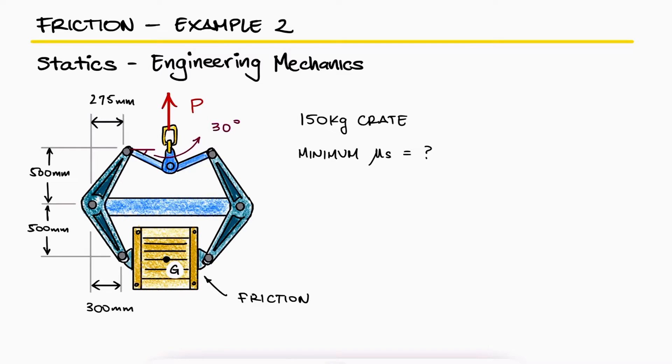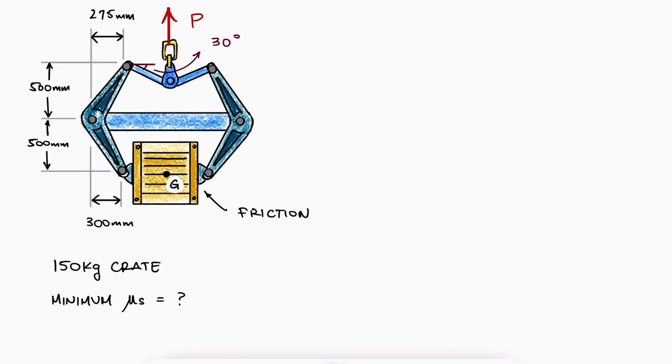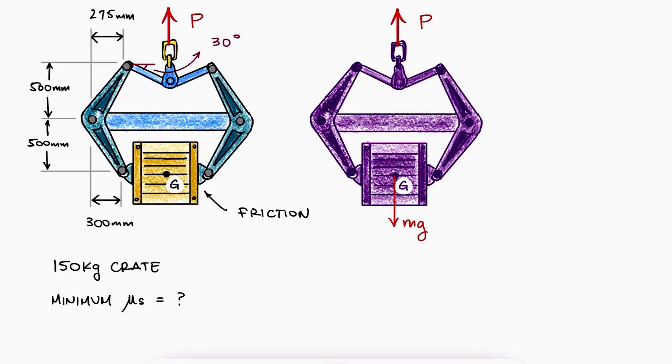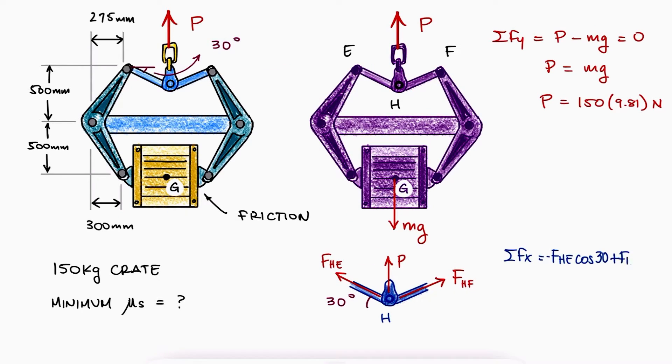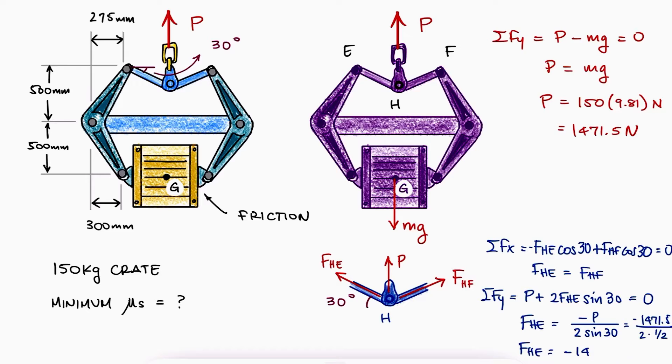Since the tongs are bringing up the crate, a free body diagram of the entire system would show us that P is equal to mg. At joint H, we can use the method of joints that we learned in a previous video, link below, to write a sum of forces in X to realize that the diagonal forces have the same magnitude, and the sum of forces in Y to find the magnitude of that diagonal force.